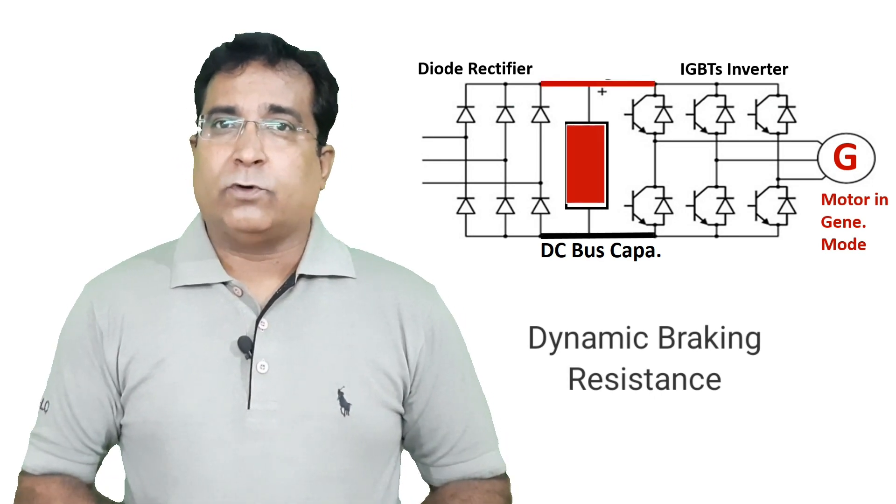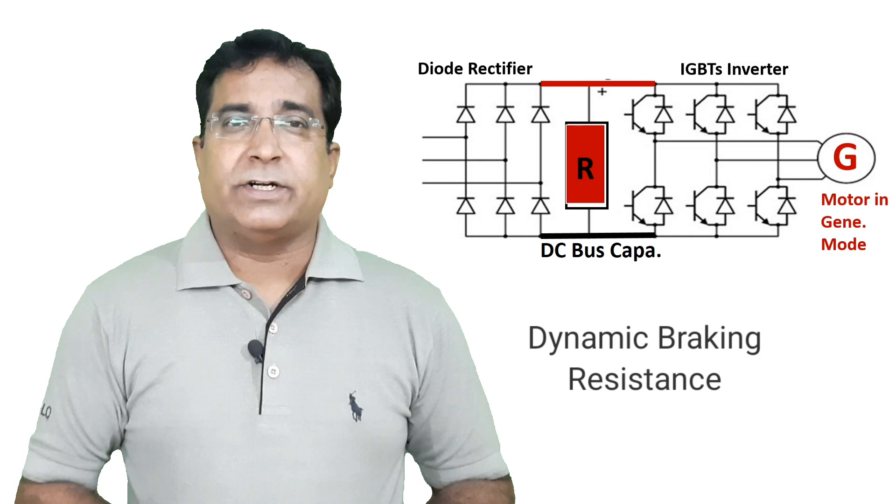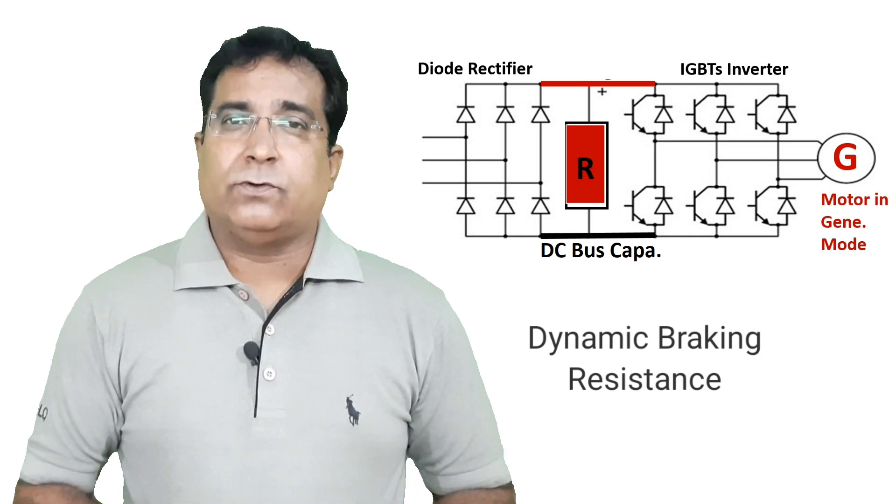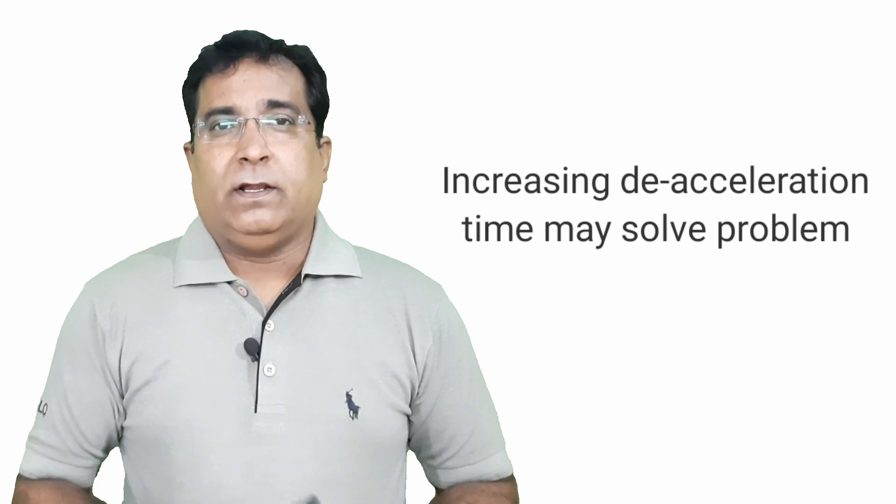Basically this resistance puts a load on motor and burns all its regenerated energy causing motor to stop. That is why this process is also called dynamic braking. This problem can also be solved by increase in the deceleration time in speed reference. If it does not solve the issue of DC bus voltage then adding a dynamic resistance becomes the solution.